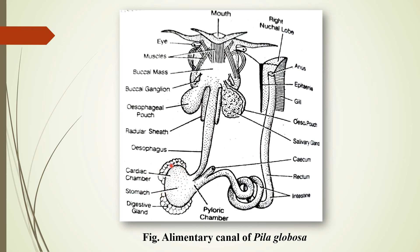The stomach is embedded into the digestive gland and is divided into two parts: the cardiac chamber and the pyloric chamber. A blind pouch-like outgrowth called the cecum originates from the lower part of the pyloric chamber. The stomach opens into the intestine, which is a long coiled tube forming two and a half to three coils, and then leads into the rectum. The rectum is thick-walled and opens to the exterior through the anus.